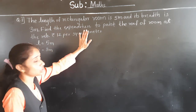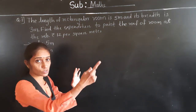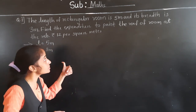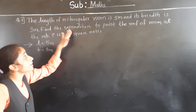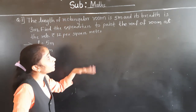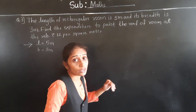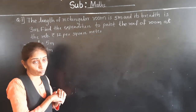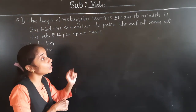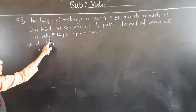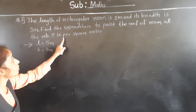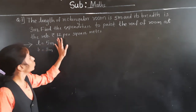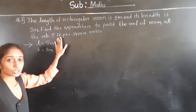Find the expenditure to paint the roof of the room. Suppose this is a rectangular room — length and breadth is given. Find the expenditure to paint the roof of the room at the rate of rupees 12 per square meter.